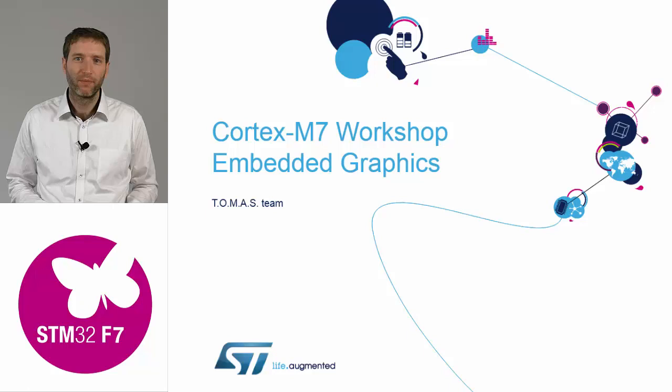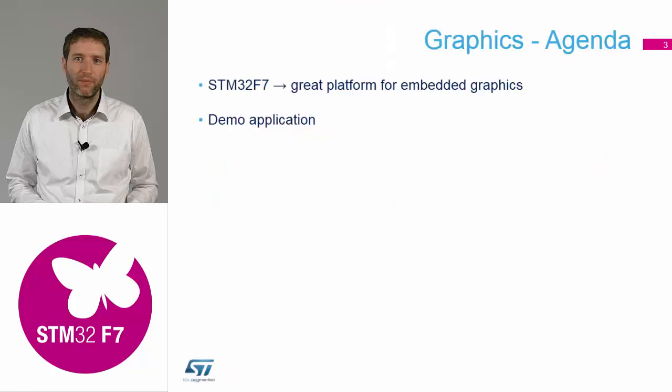In this chapter we will look at how to make an embedded graphics application on the STM32F7 processor. We will briefly explain why STM32F7 is a great platform for embedded graphics, and because in graphics it's better to see a real application than just talk about theory, we have prepared a few demo applications to show all the capabilities on the STM32F7 discovery kit.